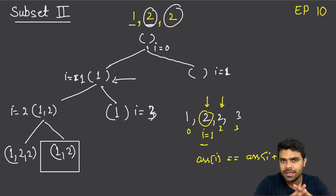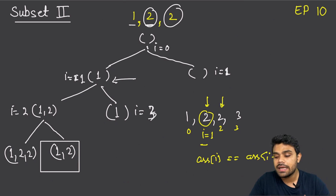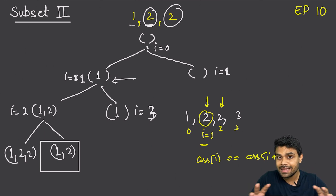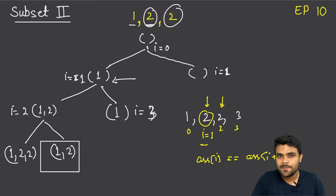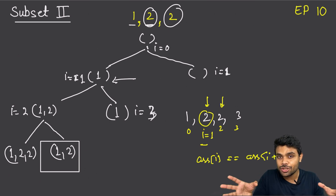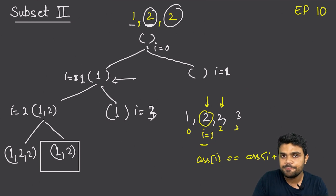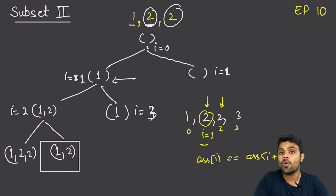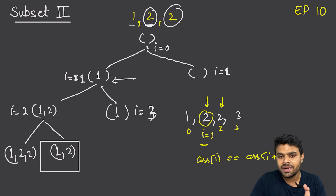Regarding time and space complexity — we discussed this in lecture 7. In the worst case, the time complexity is still the same. The worst case is when all elements are unique — the complete recursion tree expands to 2 raised to the power n nodes. The height of the recursion tree equals n, so the recursion stack space is O(n), apart from the space needed to store the final answer.